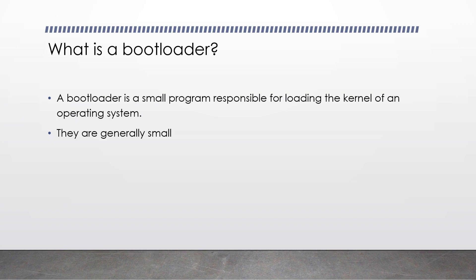When the computer first boots, we're in a compatibility mode called Real Mode. Real Mode only gives us access to 1MB of memory and it also runs only 16-bit code. We're actually fairly limited at this stage, so we have to load a little program called the bootloader. The only responsibility of our bootloader is to put us into what's known as Protected Mode, which will give us access to 4GB of address space.